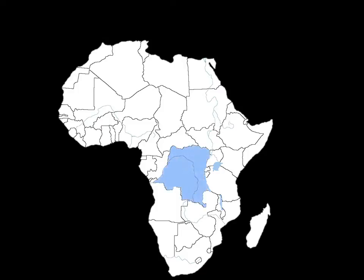First is the Democratic Republic of the Congo. The Congo River runs straight through it. On the southern tip of Africa, we have South Africa. Next, we have Nigeria. The Niger River runs straight through it.